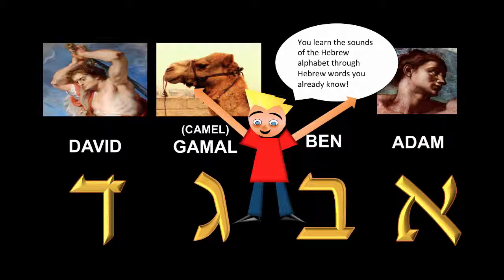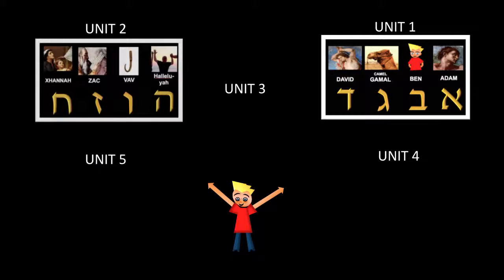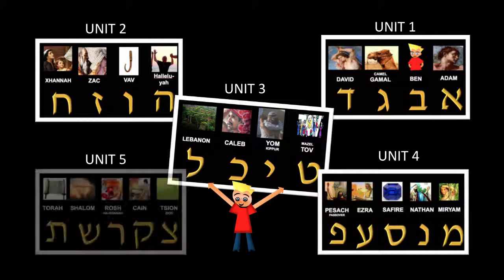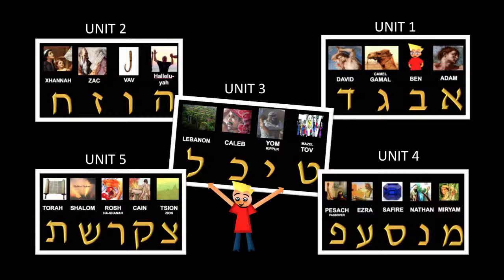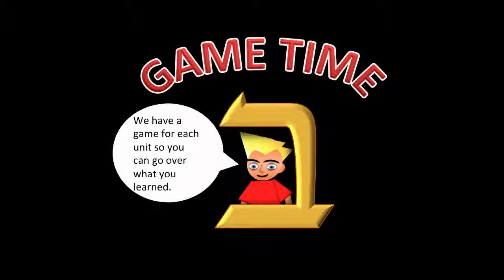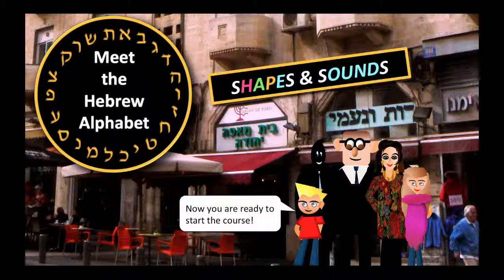So you learn the sounds of the Hebrew alphabet through Hebrew words that you already know. We have five units. The first three units, you only have to learn four letters at a time. And then in unit four and five, you learn six letters. And you can see it's all words that you know, for the most part. And then we have a game for each unit, so you can go over what you've already learned. And now you're ready to start the course: Meet the Hebrew Alphabet, Shapes and Sounds.